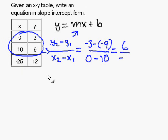I simplify my equation. 6 over negative 10, and that can be reduced to negative 3 over 5. Now I have my slope.